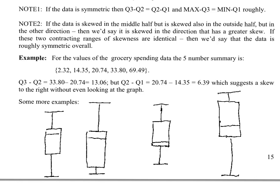Let's continue with some more examples of box plots and examining skewness. Here are four examples. I've drawn these in the vertical direction, which should translate into a number line that goes from the bottom up. So just like the low numbers are on the left of the number line, the high numbers are on the right side, and we can continue with the interpretation we were using before.